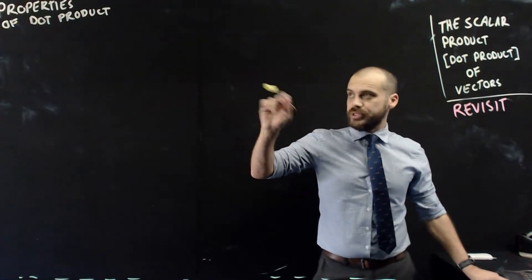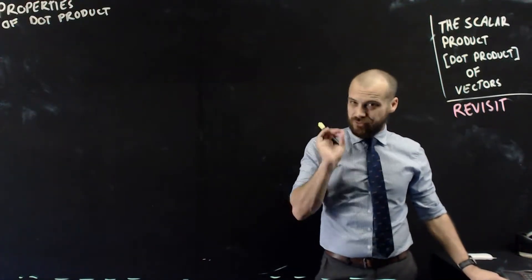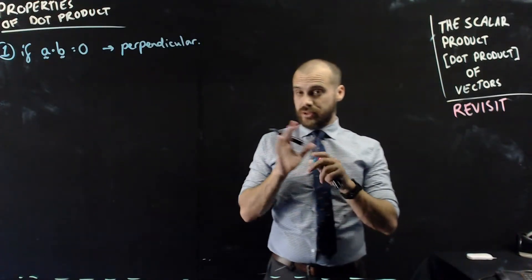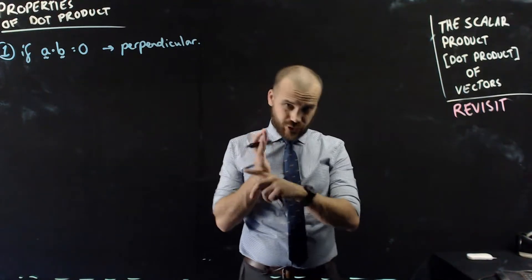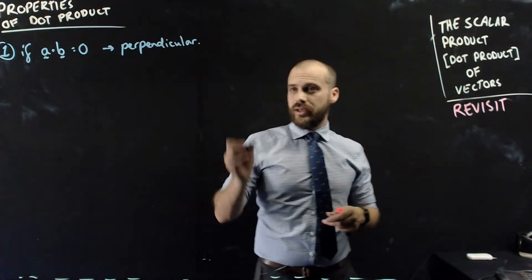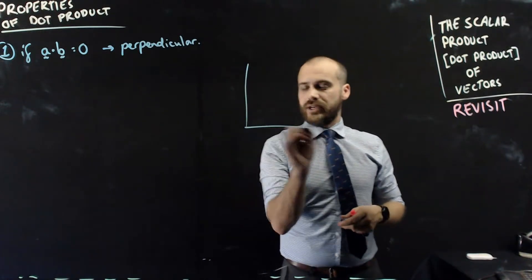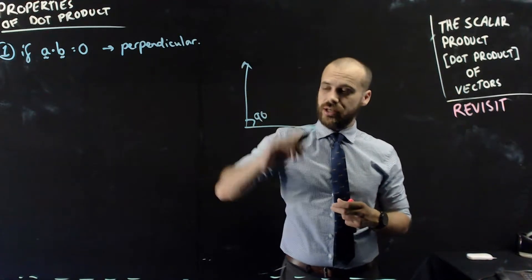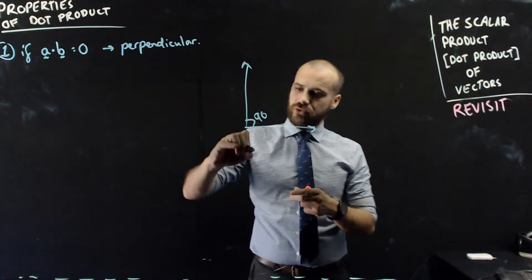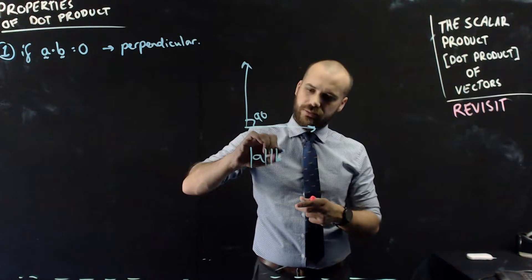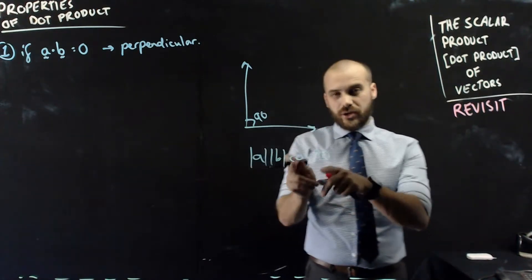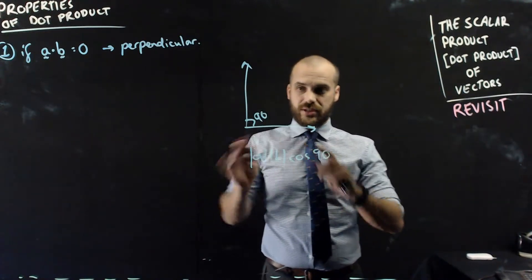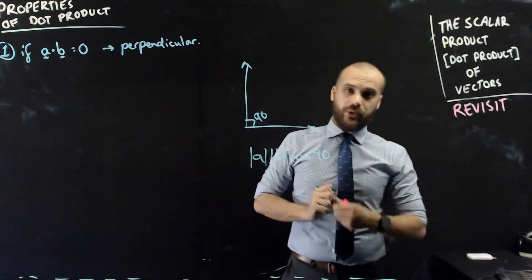Here we go with the properties of dot product. First one is probably the most important one. If a dot b equals 0, then the two vectors are perpendicular. That means I have a 90 degree angle between them. Not hard to see why. If I've got two vectors that are perpendicular, that means the angle between them is 90 degrees. And if I put that into a vector formula, it would be a times b times cos of 90. Cos of 90 is 0. 0 times anything is going to be 0. That's why that works.